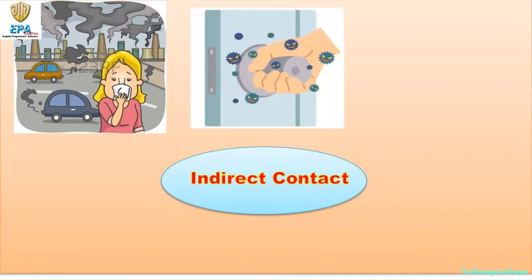Touching contaminated objects is another form of indirect contact. Germs can stay on the surfaces of objects. If we touch these objects, the germs can be transferred to our hands, and when we don't wash our hands and we touch our face or the foods that we eat, the germs can get inside our body and make us sick.